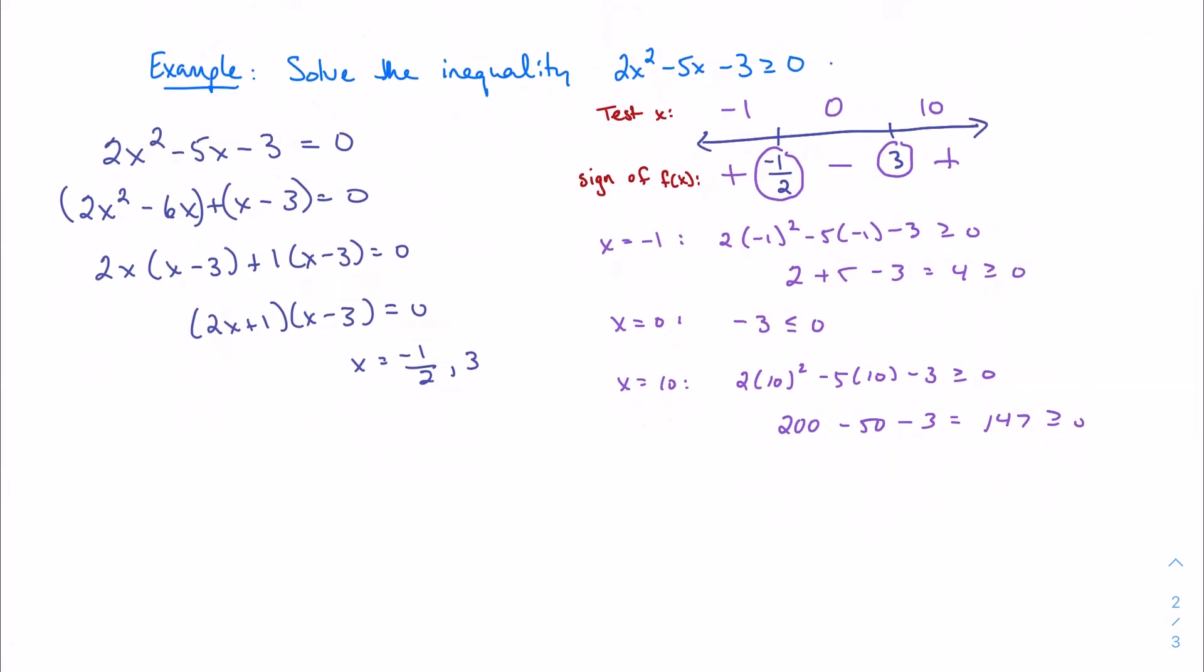The question is what do I do with this? I'm looking for all the x's that make my function greater than zero, which means positive. I get positive when I'm less than negative one-half, or equal to negative one-half will give me my zero. Then I'll get positive or zero when I'm at three, including three, and greater than three.